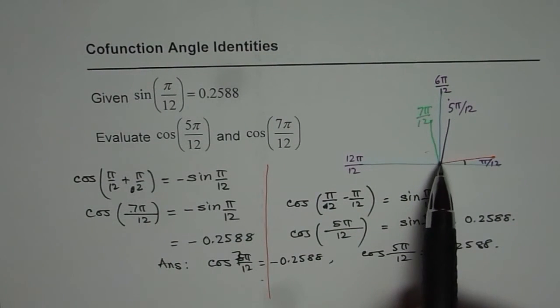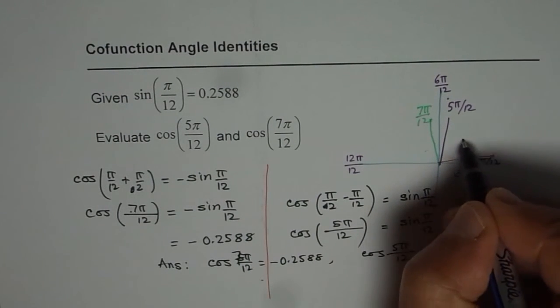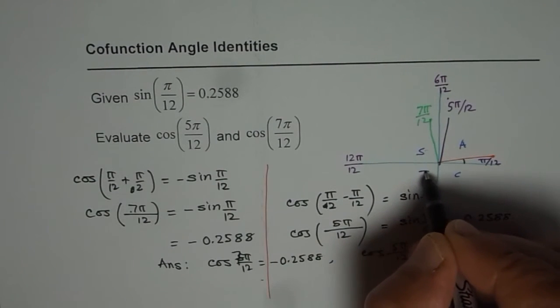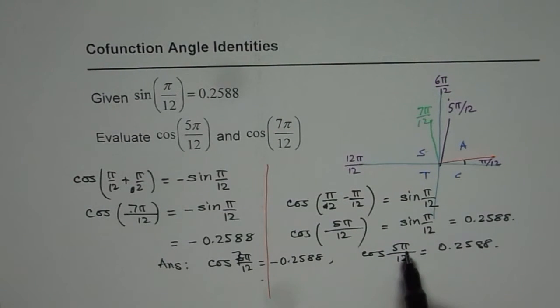As expected. So when we started we had a clear idea that in quadrant 1 all are positive. So if you apply the CAST rule, all are positive. So 5π/12 is in quadrant 1, it should have been positive, it is positive.